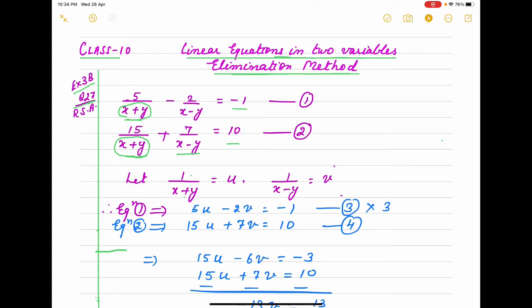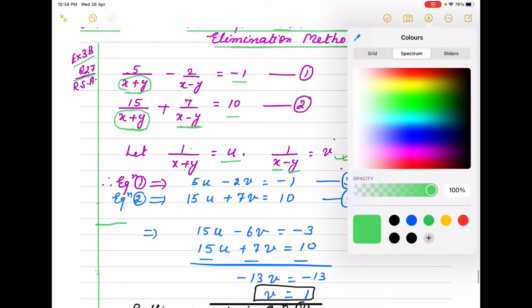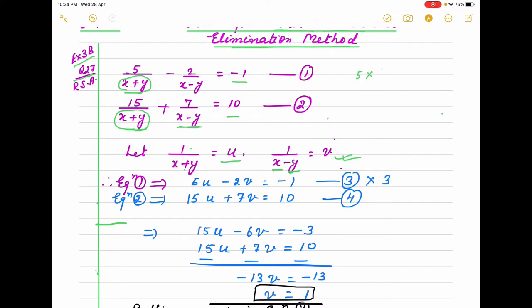We suppose that 1/(x+y) is u, you can take any variable other than x and y because already here you may confuse. And 1/(x-y) as denominator is v. What will be the form of equation? It will be 5 times 1/(x+y), so it is 5u. This way 2/(x-y) can be written as 2v. The equation becomes 5u - 2v = -1, that is equation 1. Second equation is the same way: 15u + 7v = 10. This is equation 3 and 4.